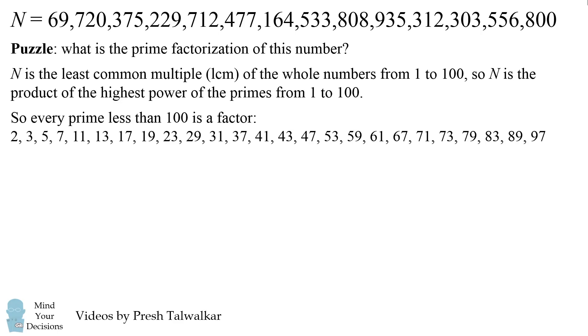So we include every prime number that's less than 100. We also need to account if there are repeated prime factors. In order to do that, we find the highest power of each prime that's less than 100. For example, 2 to the 6 is equal to 64, so we need 6 factors of 2 in N.